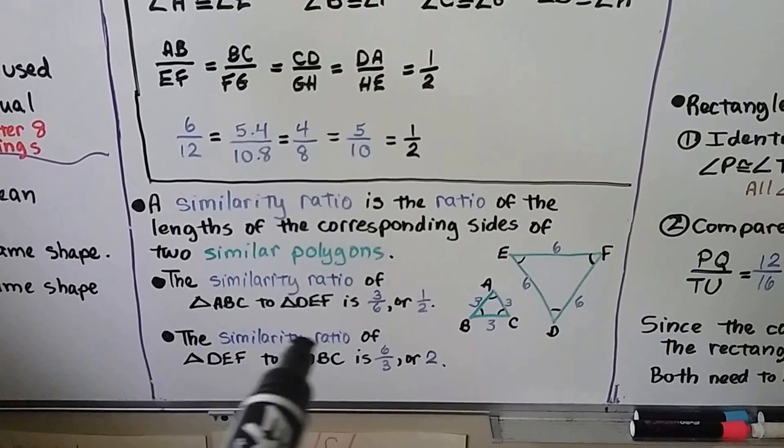Now let's take a look at these triangles. We've got triangle ABC and triangle DEF. We've got congruent marks, so A is congruent to D, B is congruent to E, and by the third angles theorem, angle C must be congruent to angle F.